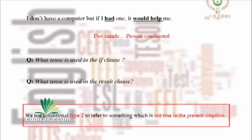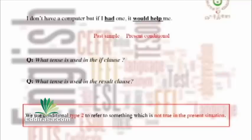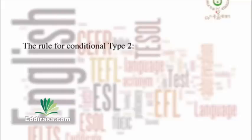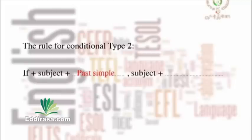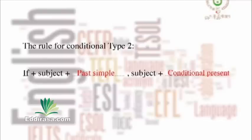We use the second type when we refer to something which is unreal in the present situation. As in the example: I don't have a computer — if I had one. We refer to the present, but because it's unreal, we use the past simple. The rule is: if plus subject plus past simple, comma, subject plus would plus stem — the present conditional.